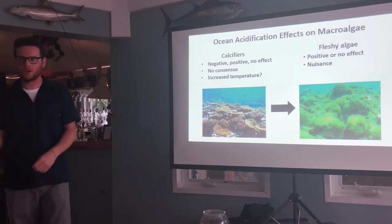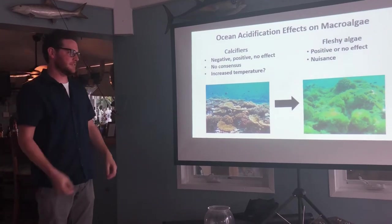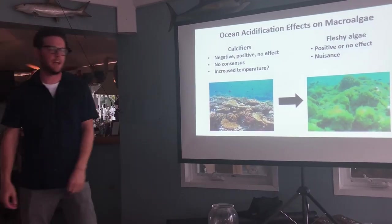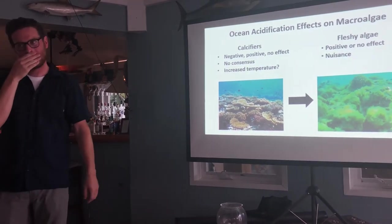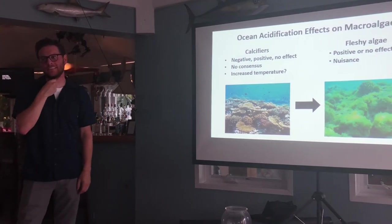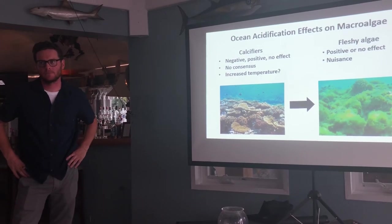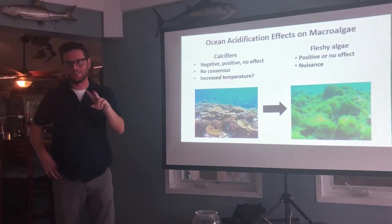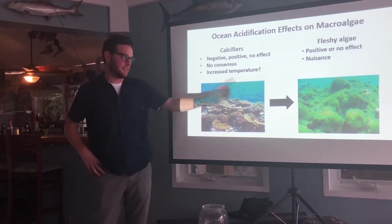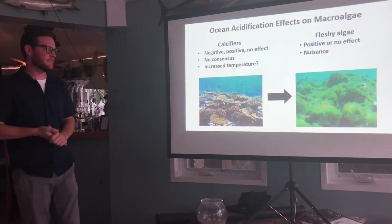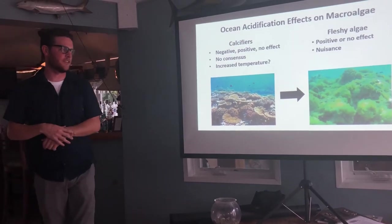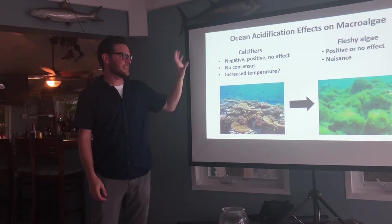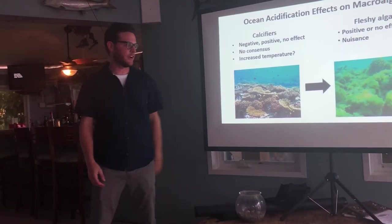We can tell if a reef is healthy by the ratio of calcified coral and calcified algae to fleshy algae. A healthy reef today has primarily calcified organisms, and we might be shifting to a more dominant fleshy algae reef. That's a possibility when considering just temperature and ocean acidification — though there are so many other things to consider: overfishing, disease, and other stressors. That's what I'm getting into — how these organisms are probably going to respond to these environmental changes.